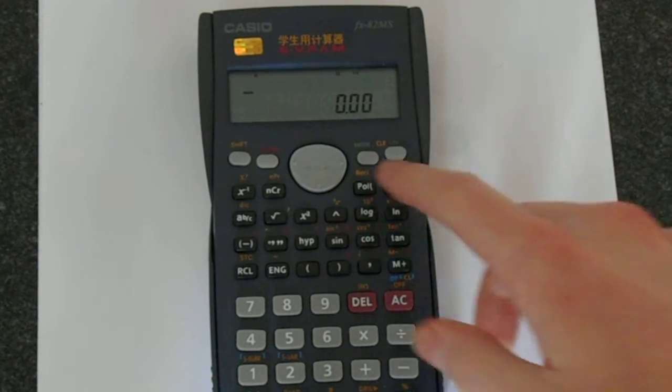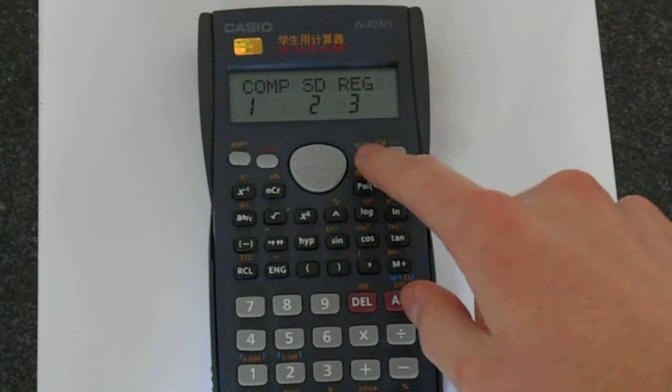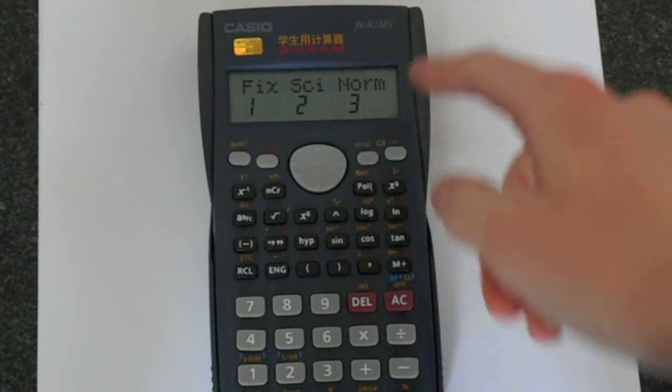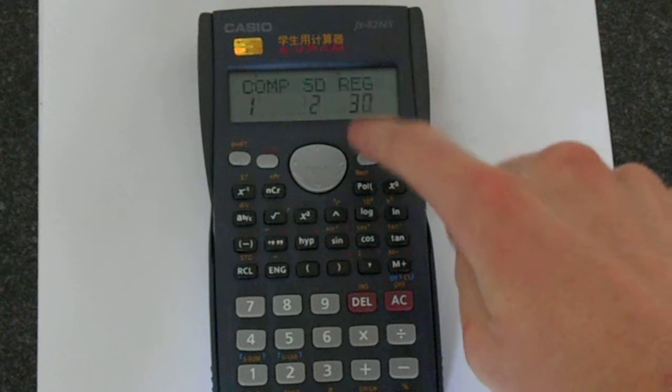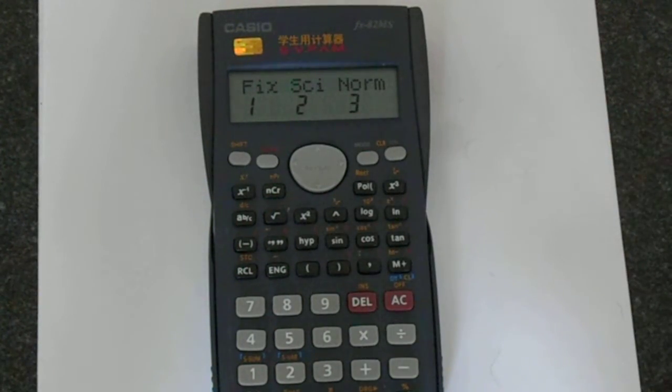The way to do this is to press the mode button. It gives us a menu. If you press it again, we get another menu, and again we get another menu. So really you're pressing mode three times, and this gets you to this menu.